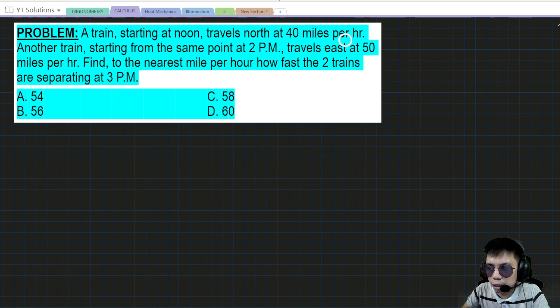The problem is: a train starting at noon travels north at 40 miles per hour. Another train starting from the same point at 2 PM travels east at 50 miles per hour. Find to the nearest mile per hour how fast the two trains are separating at 3 PM.